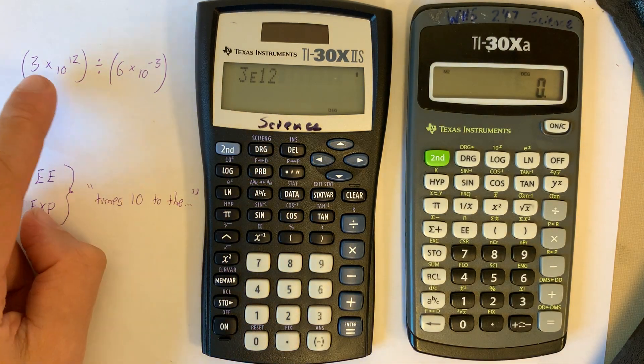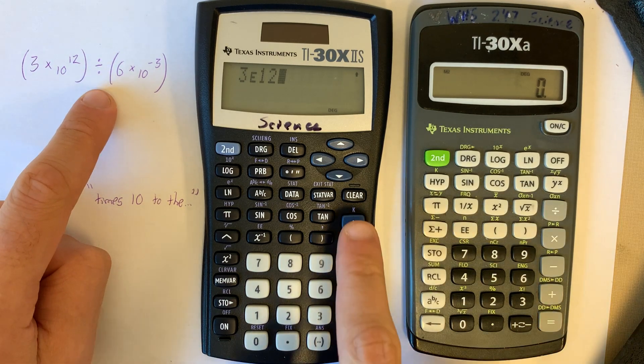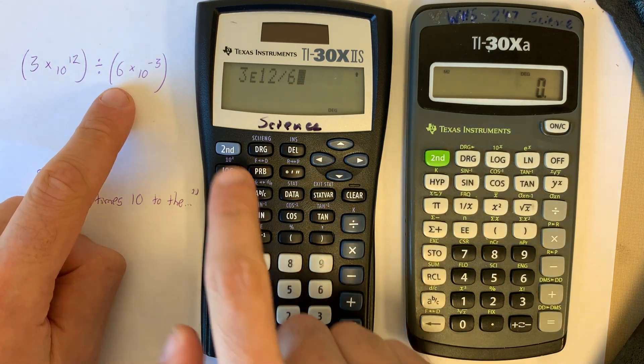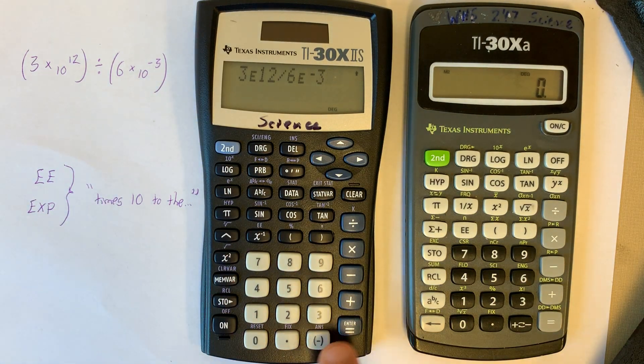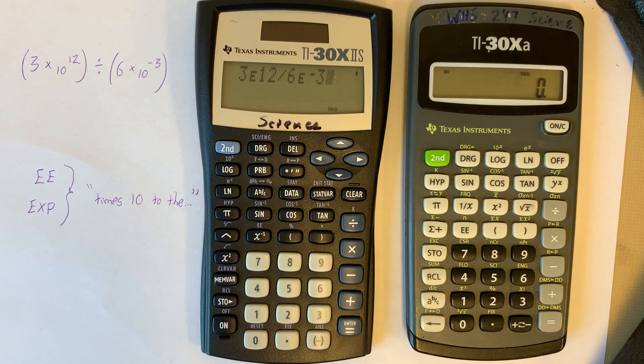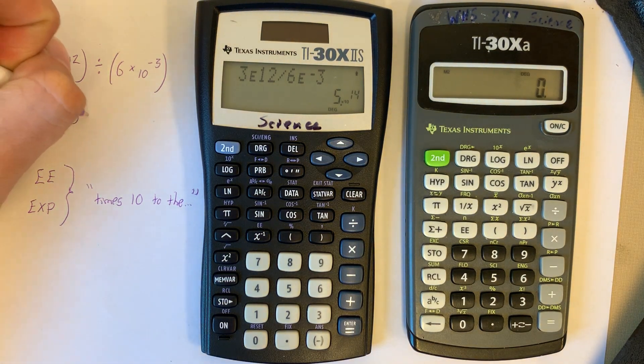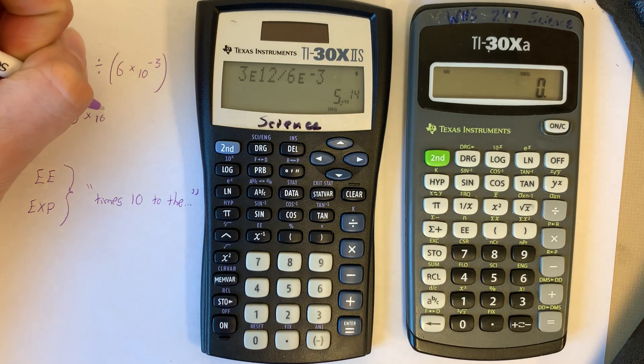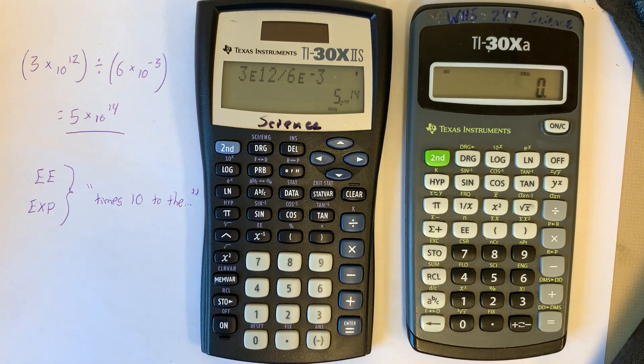3E12 means 3 times 10 to the 12th. Divided by 6 second EE negative 3. On this calculator, negative and minus are different buttons, we need negative. Equals, and it gives us our answer in scientific notation, equals 5 times 10 to the 14th power. So that's our answer.